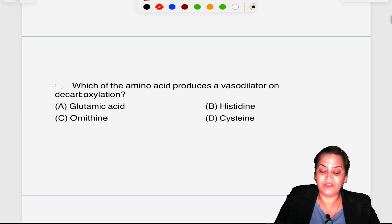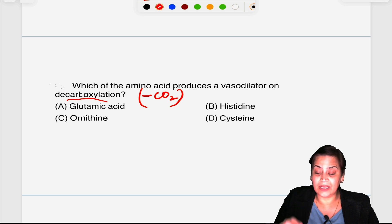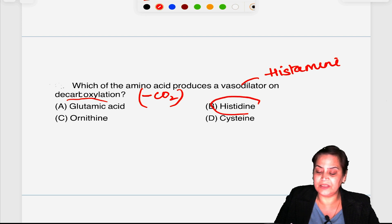Which amino acids produces a vasodilator on decarboxylation? Decarboxylation means removal of carbon dioxide. If we talk about this vasodilator, one comes in our mind: histamine, and histamine is synthesized from histidine by decarboxylation. So the answer will be B.